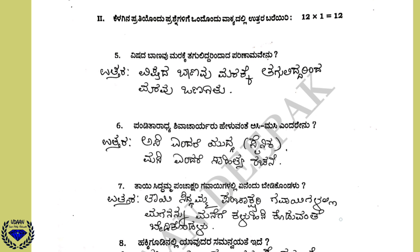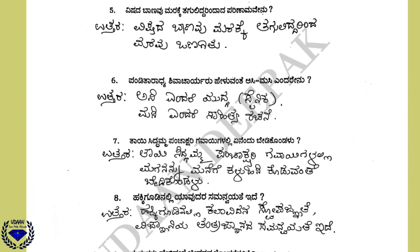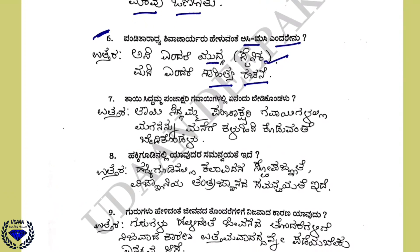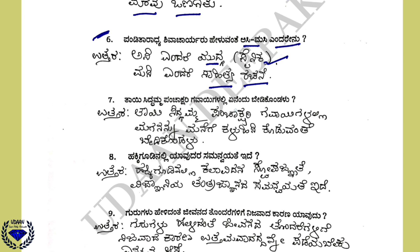Now moving on to one-liners. Each question should be answered in one sentence. Question number 5 is from the first lesson: Vishad baanavu marakkit taguliddarindad parinam vhenu — the answer is maravu vanagitu. Question number 6: Pandita radhya shivacharyaru heleguvante hasi-masi yandharin — hasi yandharin means sainik (soldier), masi yandharin means sahitya rachana (literary composition). Question number 7: Thaay siddhamma panchakshari gavayi galalli maghananannu managhi qadu yandharinu.